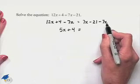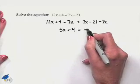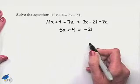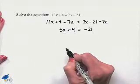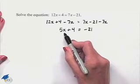What that accomplishes is now we only have a variable expression on one side of the equation. Next, to isolate that X term, we're going to subtract 4 from both sides.